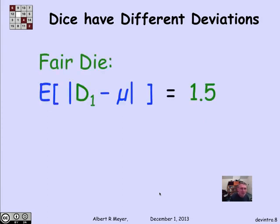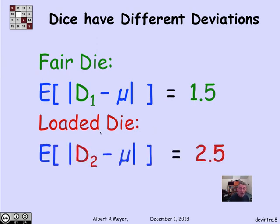So how do I capture the difference? Well, if I look at the expected distance of the fair die to its mean, I claim it's 1 and 1/2. But the expected distance of the loaded die from its mean, the same mean, remember, 3 and 1/2, is actually 2 and 1/2. In fact, the second die is always exactly 2 and 1/2 from its expected value.